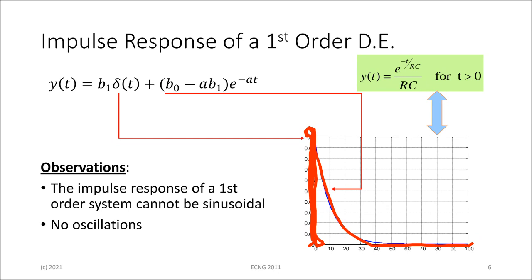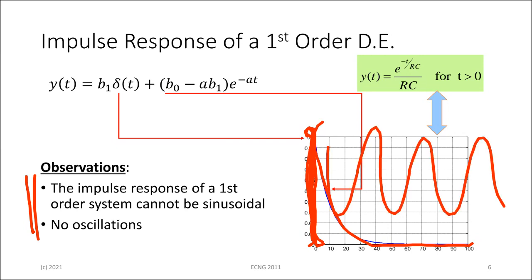The main thing here is that the impulse response of our first order system cannot be sinusoidal. You're never going to get something oscillating happening. First order systems cannot give you a sinusoidal response — in other words, they can't produce oscillations.